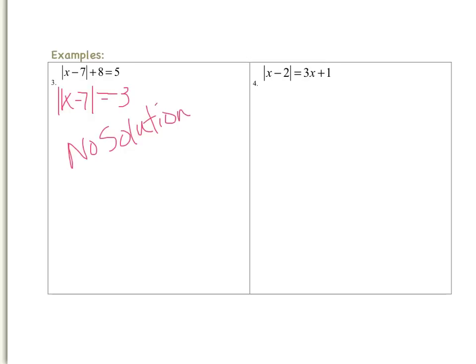Now let's look at our fourth example. It's just a little different — we actually have an expression on the right side of the equation. So it is the absolute value of x minus 2 equals 3x plus 1. Since the absolute value expression is already isolated, I just move right into rewriting the absolute value as a disjunction. So I will have x minus 2 equals negative of (3x plus 1) — I'm taking the negative of the entire expression — or x minus 2 equals 3x plus 1.